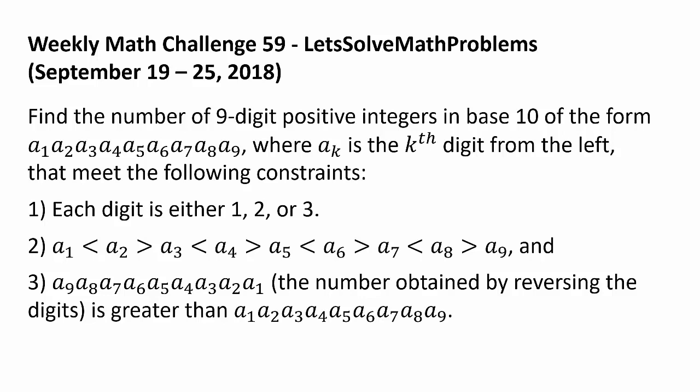The number obtained by reversing the digits, a₉a₈a₇a₆a₅a₄a₃a₂a₁, is greater than a₁a₂a₃a₄a₅a₆a₇a₈a₉.